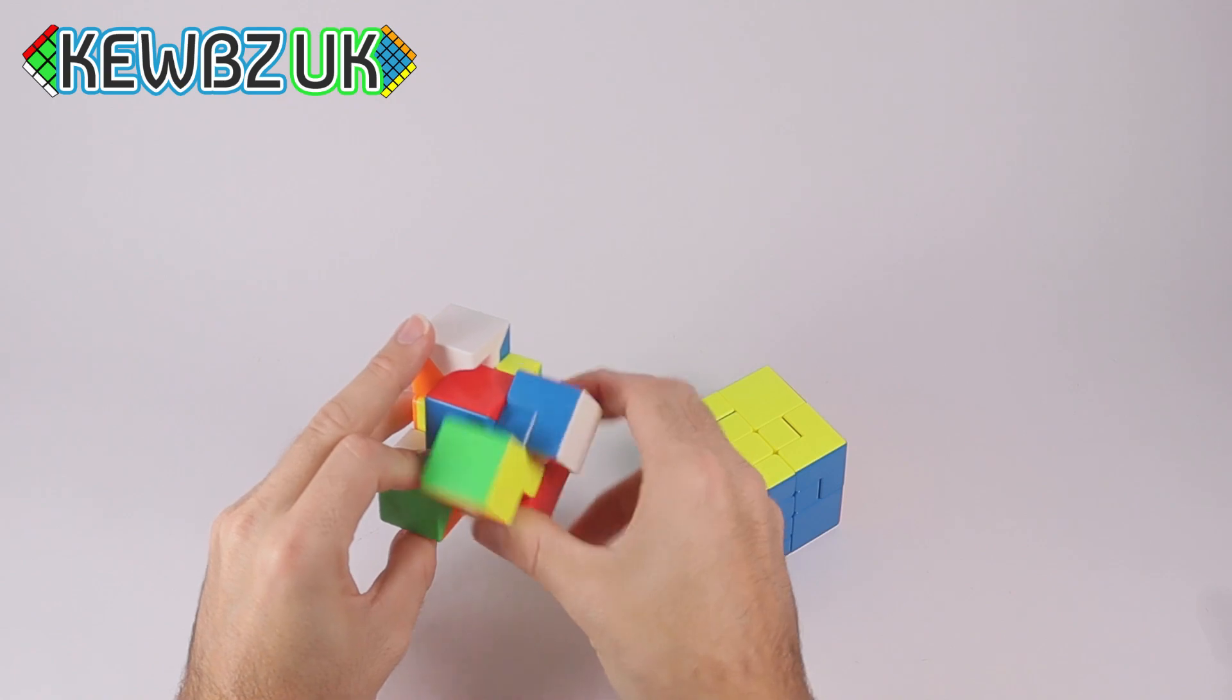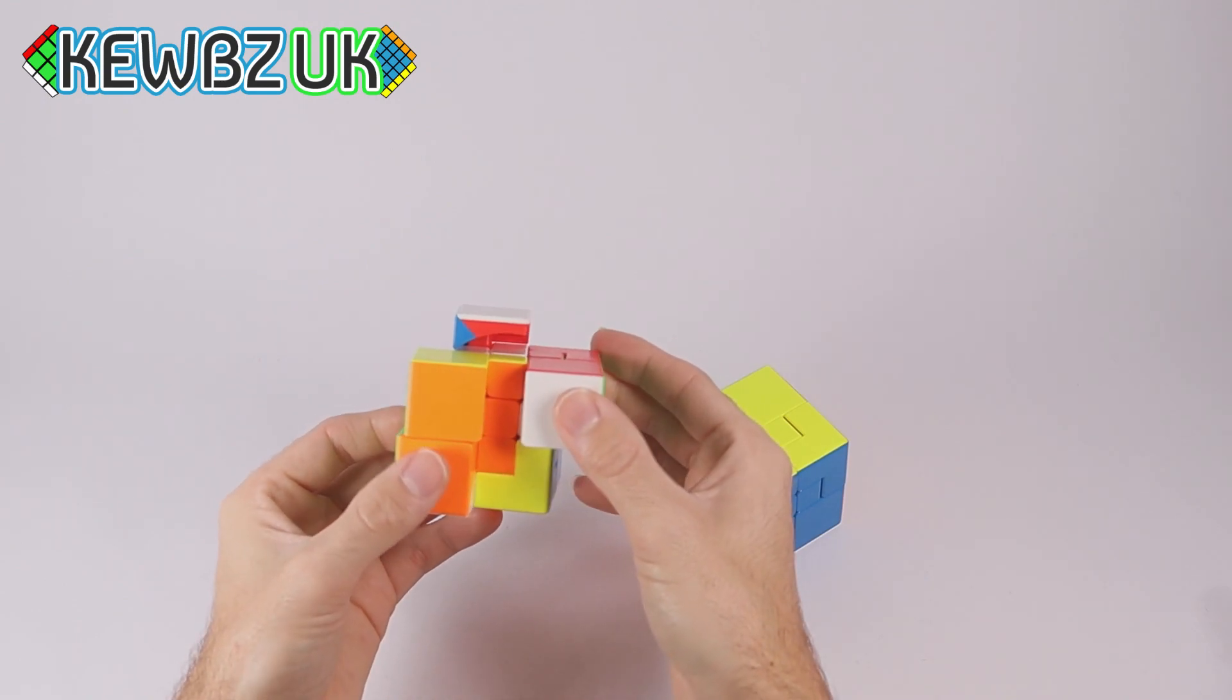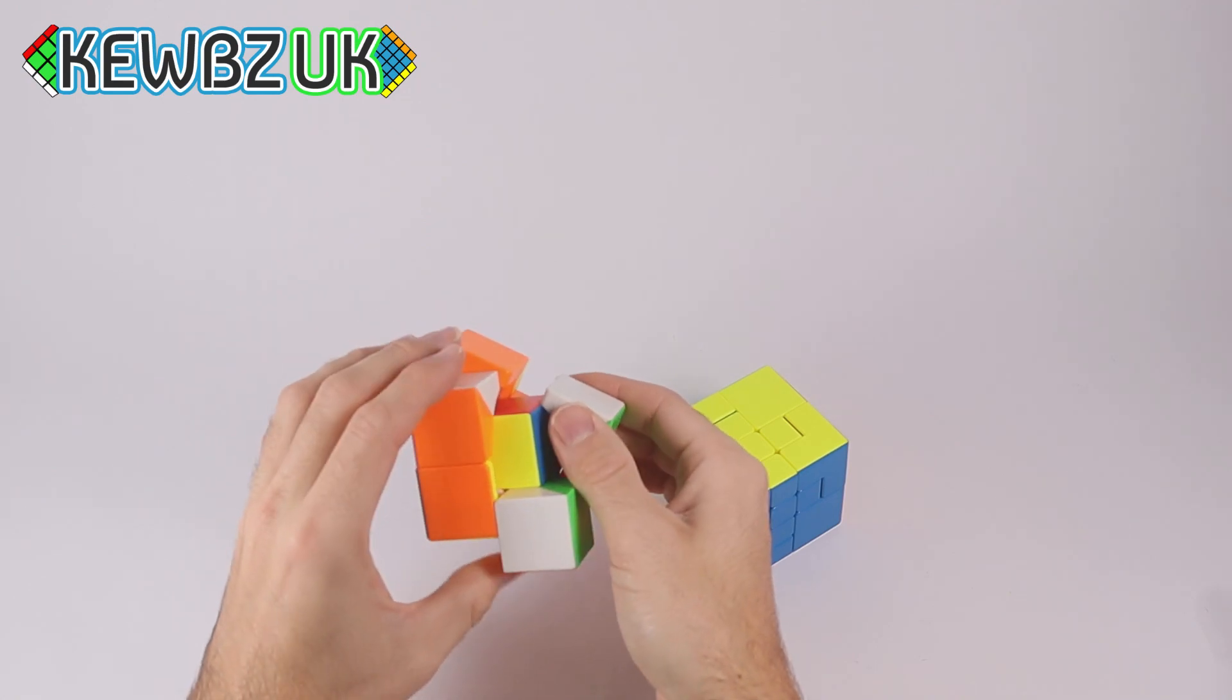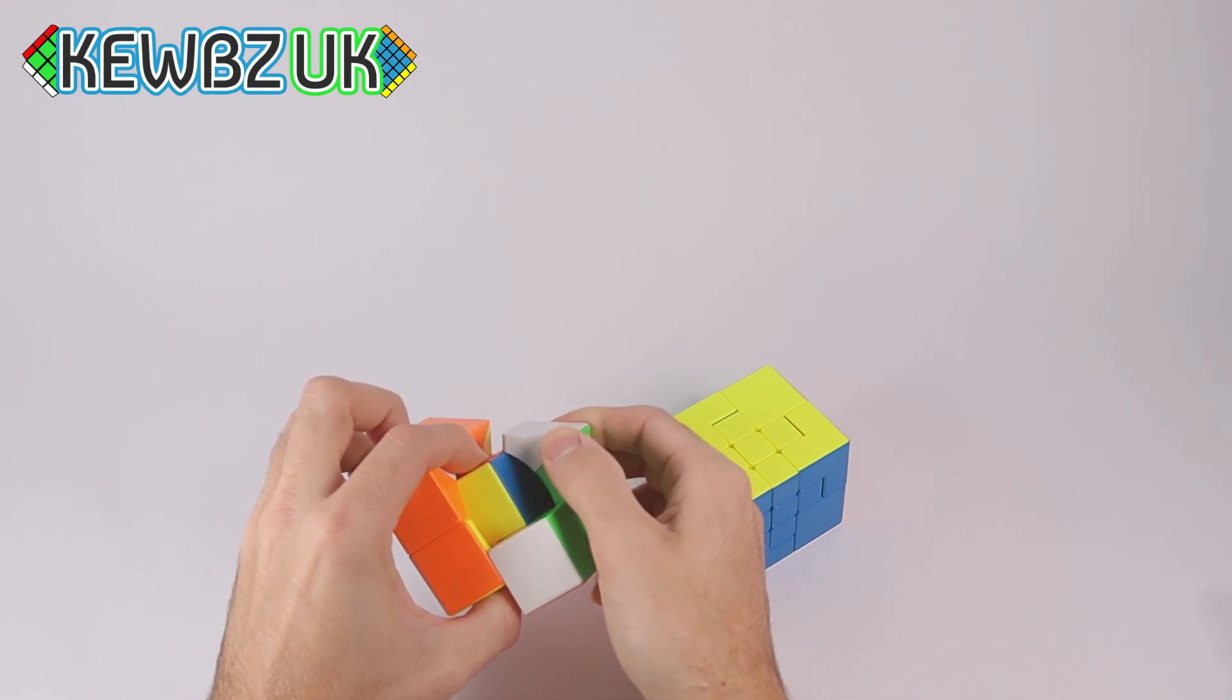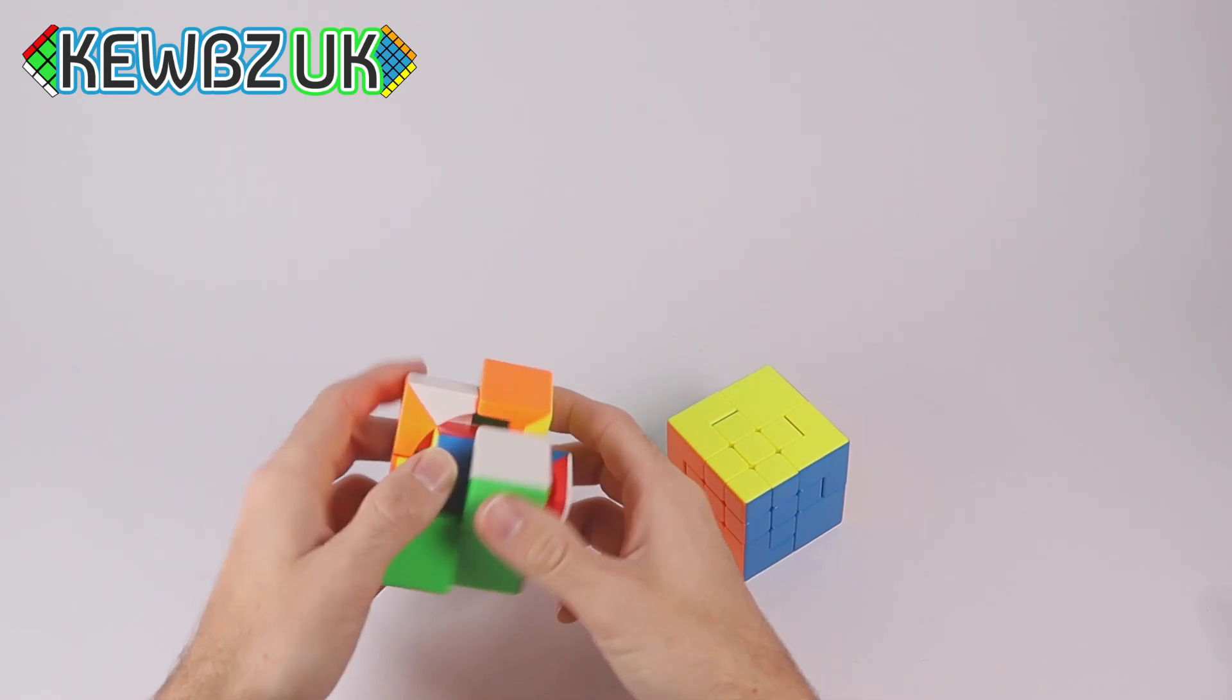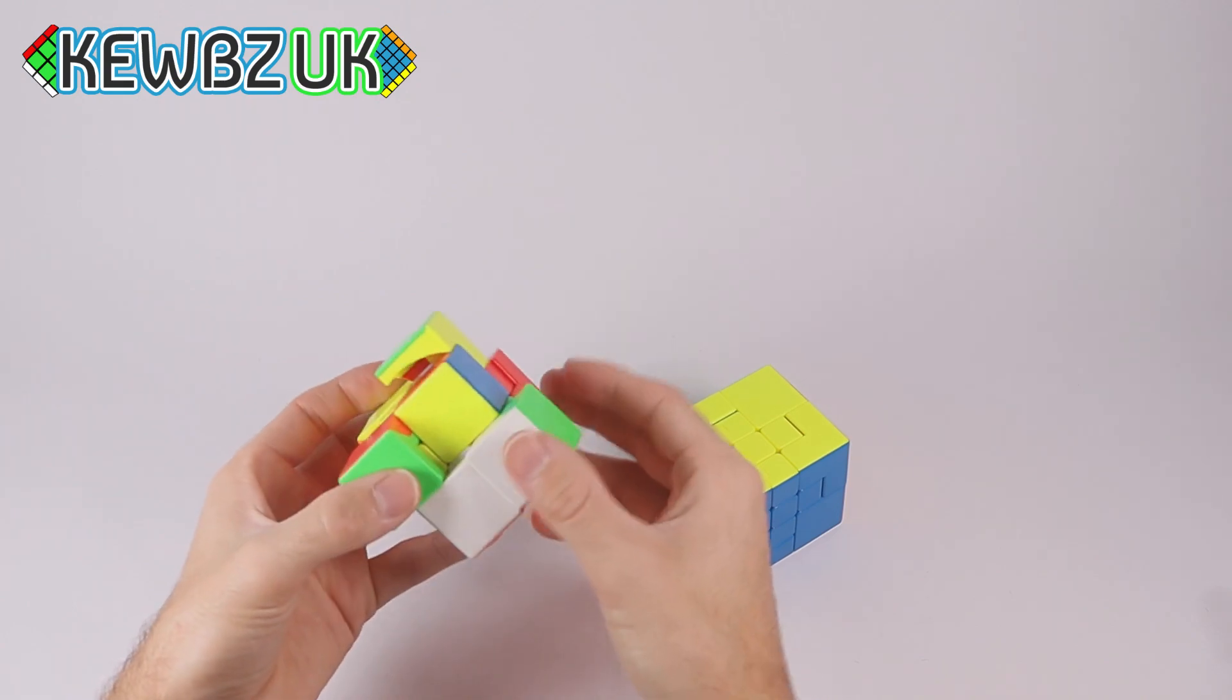And again, we get a bandage back here if we try to do a U2. So, I'm not too sure if you're meant to be able to go around that corner or not. It seems to go around one way, but not the other way. So, maybe that wasn't a bandage. Definitely going to take a little bit of getting used to and knowing what moves you can and can't do.